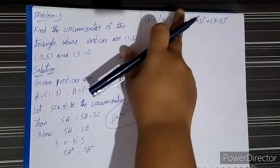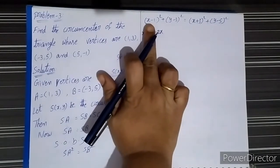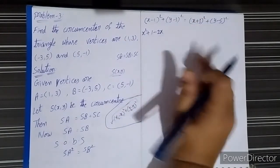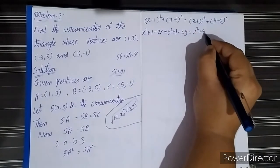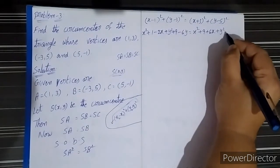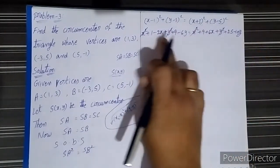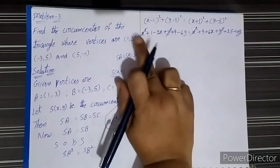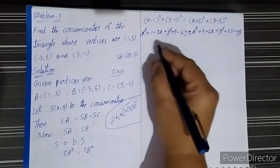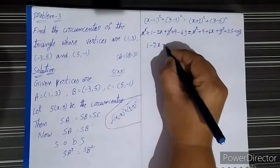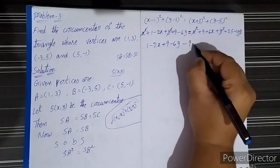Substituting values and applying the (a - b)² and (a + b)² formulas: x² + 1 - 2x + y² + 9 - 6y = x² + 9 + 6x + y² + 25 - 10y. The x² and y² terms get cancelled because they appear on opposite sides with the same sign. The remaining values are: 1 - 2x + 9 - 6y.